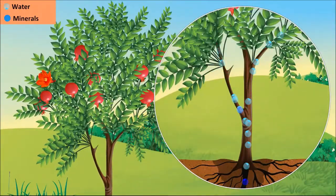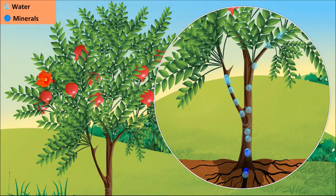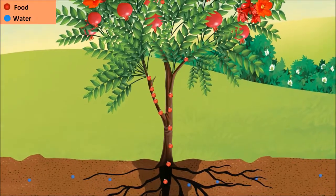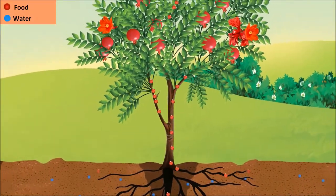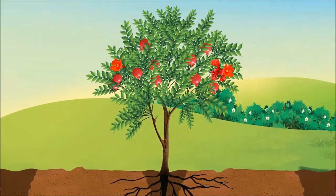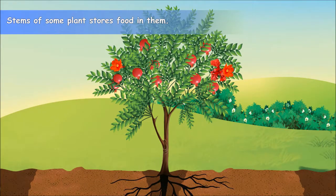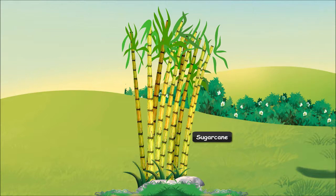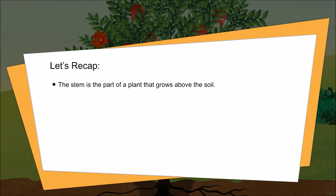The stem of a plant also acts like a transport system. It takes water and minerals from the root to all the other parts of a plant. It also carries food from the leaves to the other parts of a plant. In addition, the stems of certain plants also store food in them. For example, sugarcane — such stems are edible.